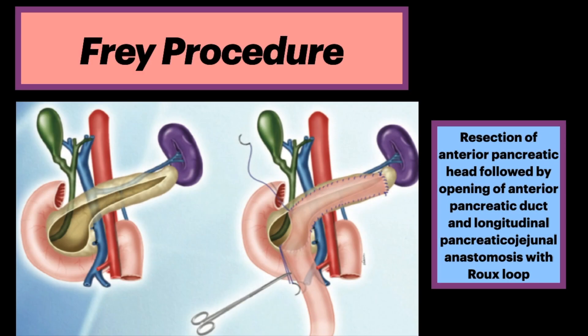The Frey procedure is resection of the anterior pancreatic head, followed by opening of the anterior pancreatic duct and longitudinal pancreaticojejunal anastomosis with a Roux loop.